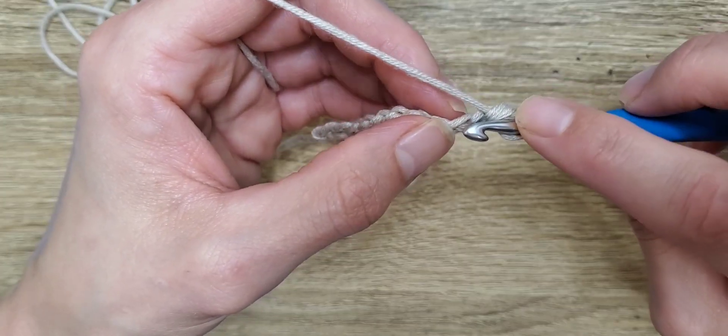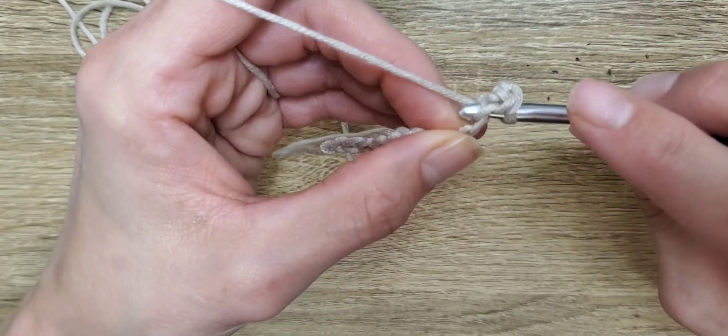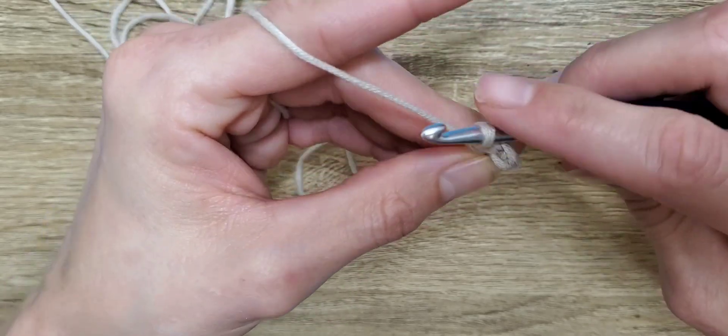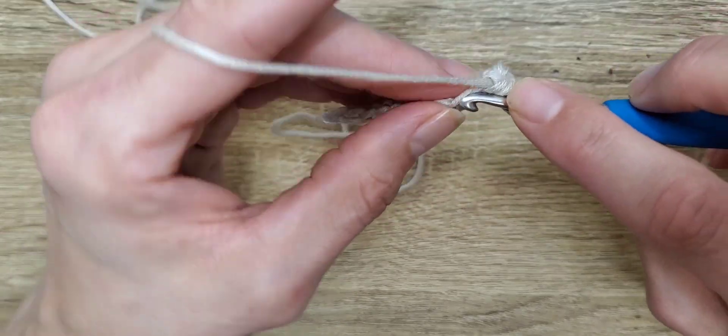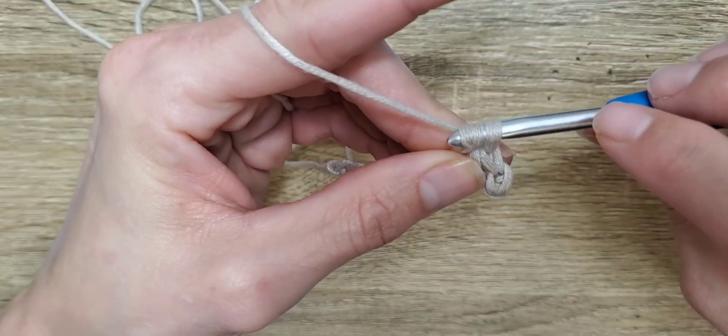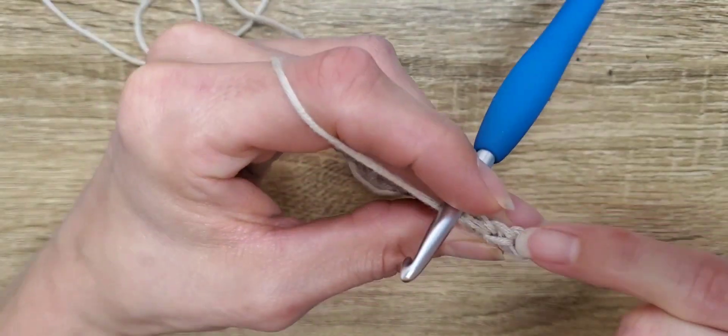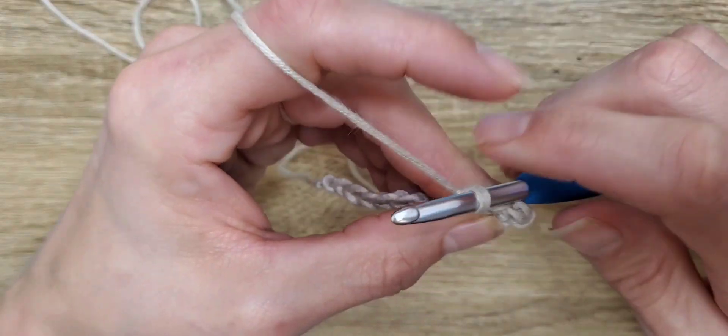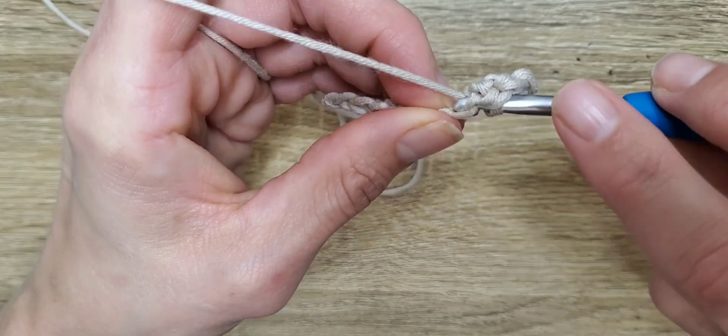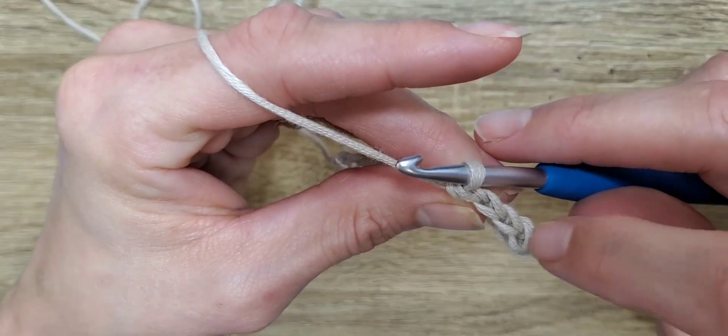And we're going to do that all the way across. We should have 10. So, here's number two. Insert your hook, yarn over, pull through. You've got two loops. Yarn over, pull through those two loops. Insert your hook, yarn over, pull through. Yarn over, pull through those two loops. That's three. And you can see the V's forming on the top. Let's continue. Push through that top V. Yarn over, pull through. Yarn over, pull through two. And there's four.